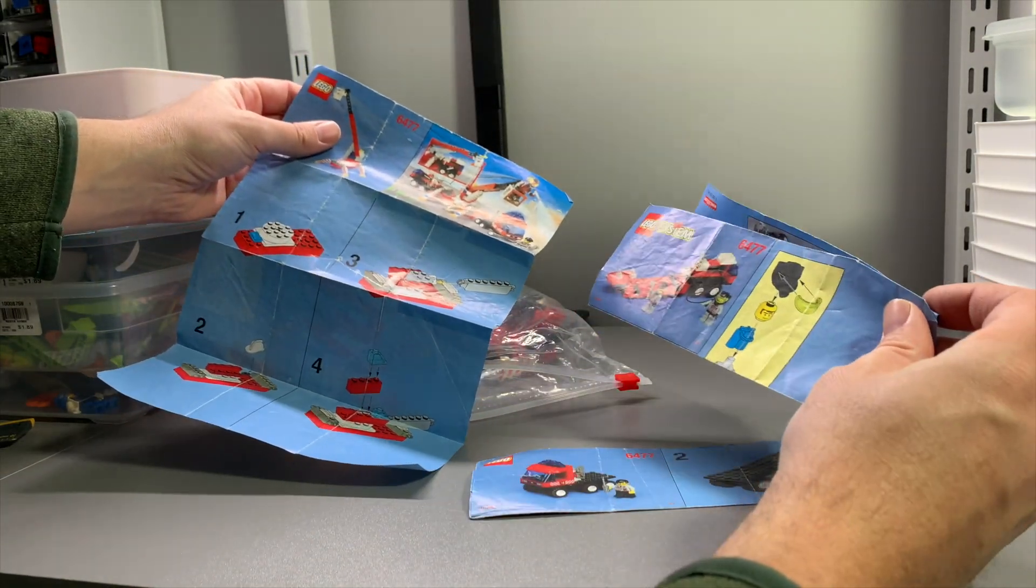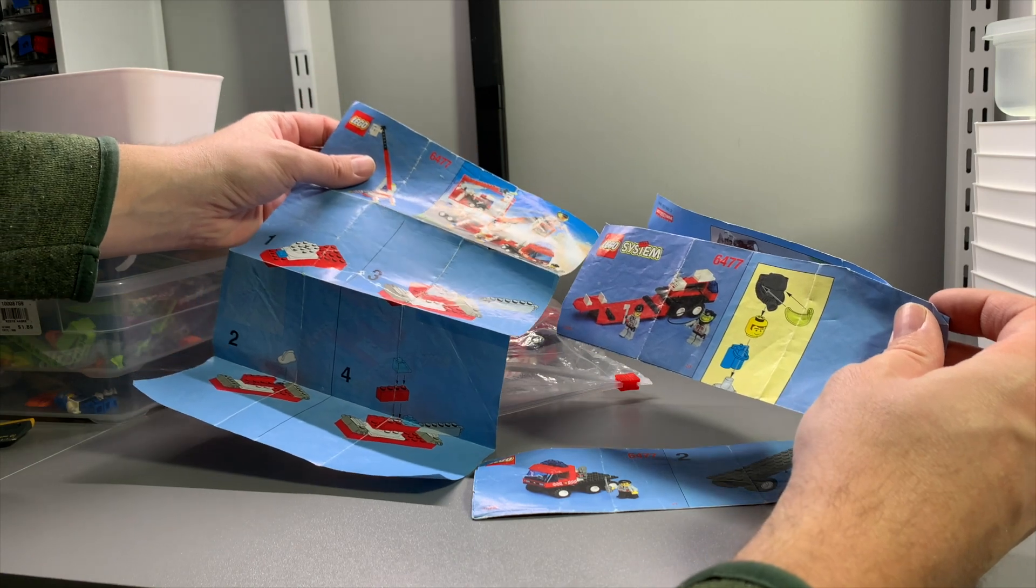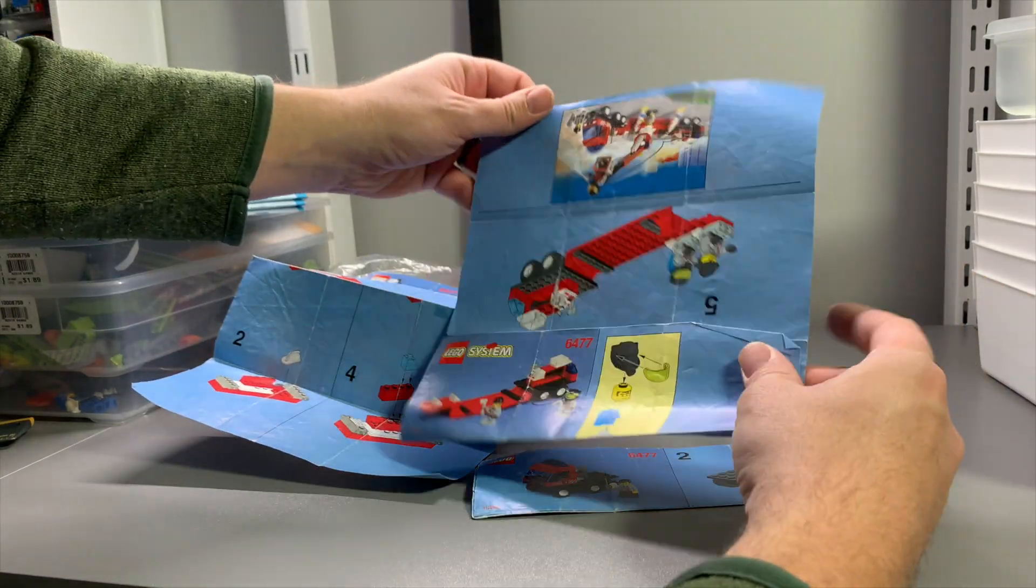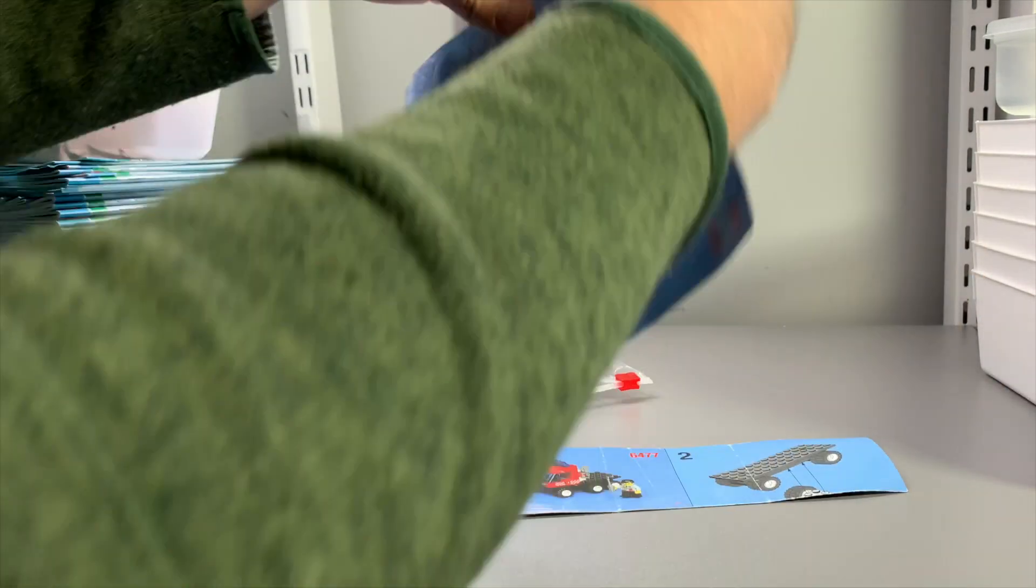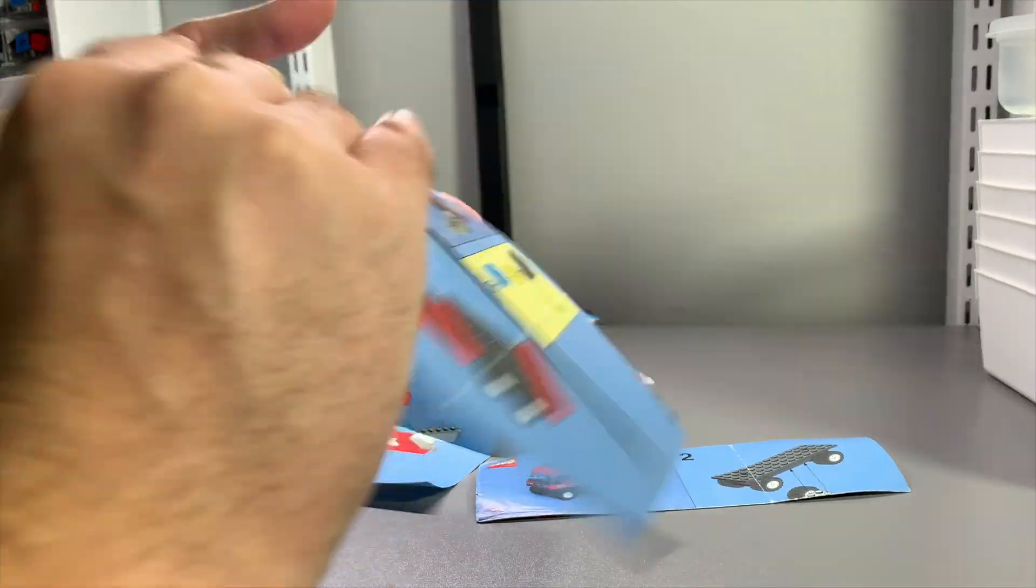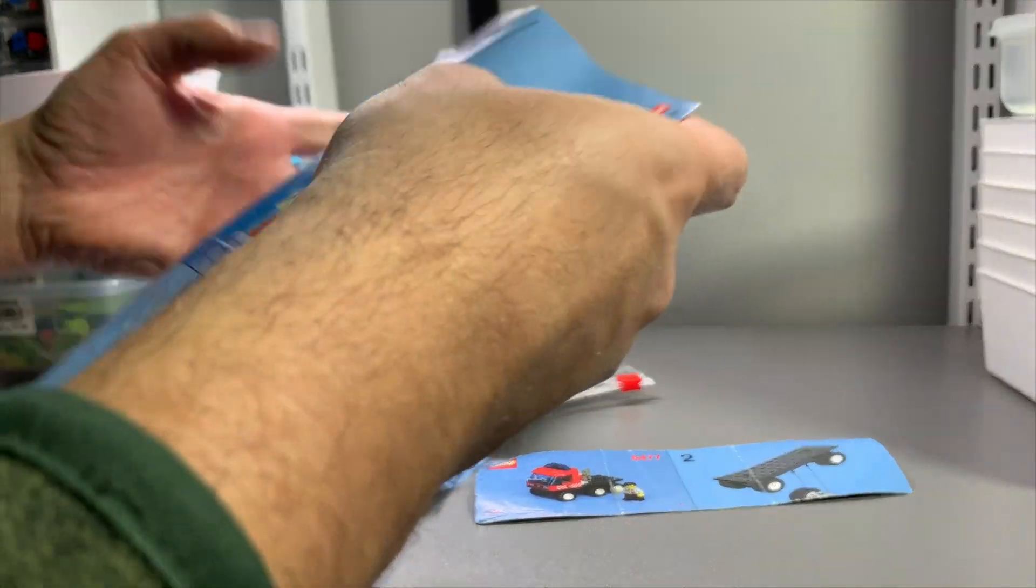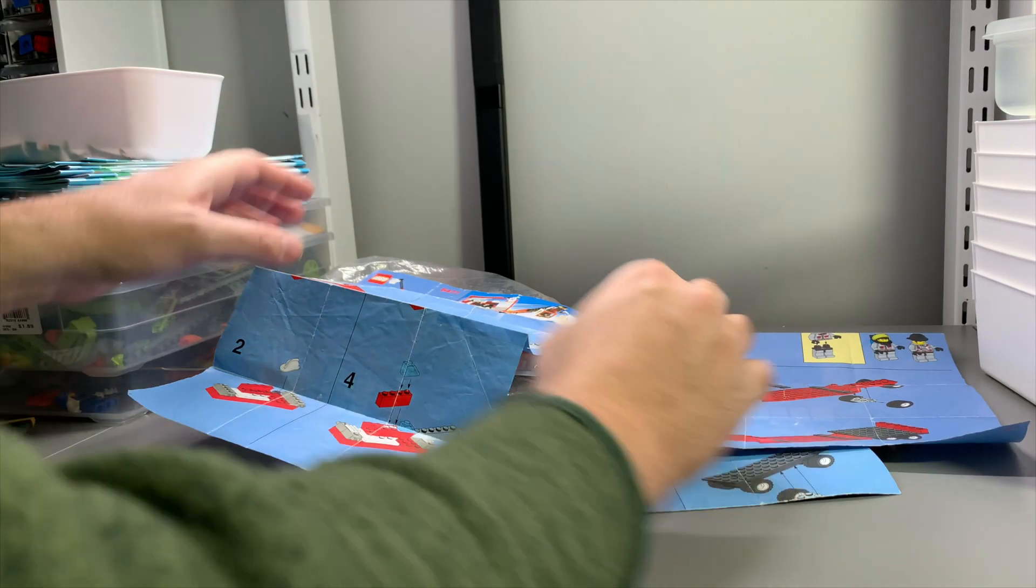Oh, no. They all belong to the same one. 6477. It's just for the individual vehicles. Okay, what do we want to start with?